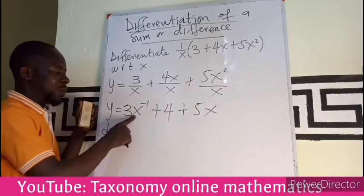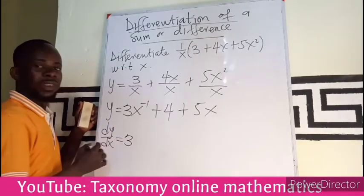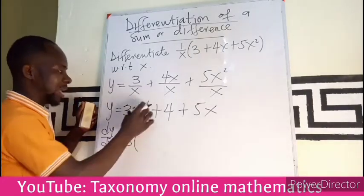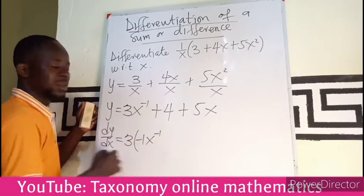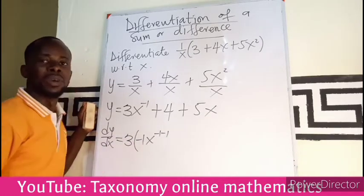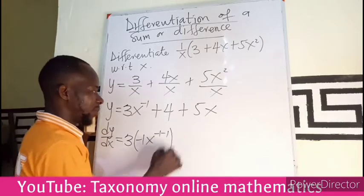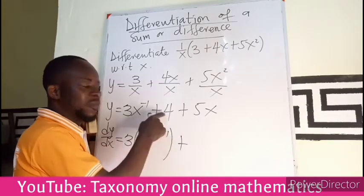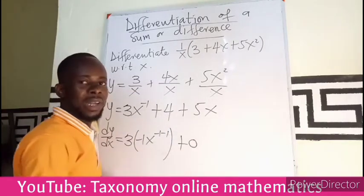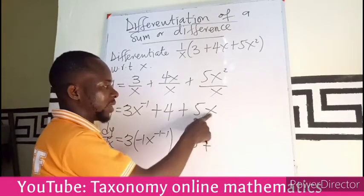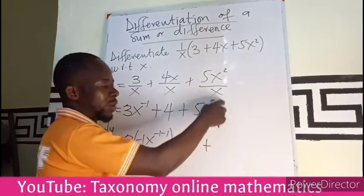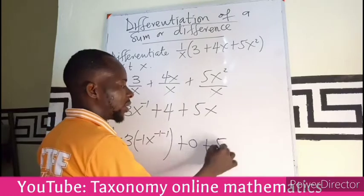I am going to have this: I am holding the constant, multiplying the exponent, then multiply the function, then reduce the exponent by 1. Plus, if we differentiate a constant you get 0. Plus, if we differentiate this, the whole of this is going to be 1, so we have only 5.